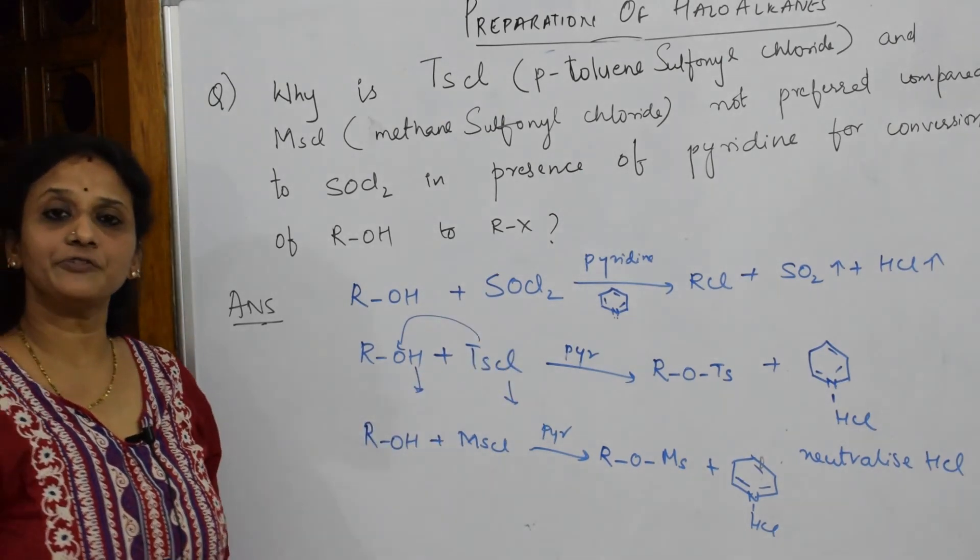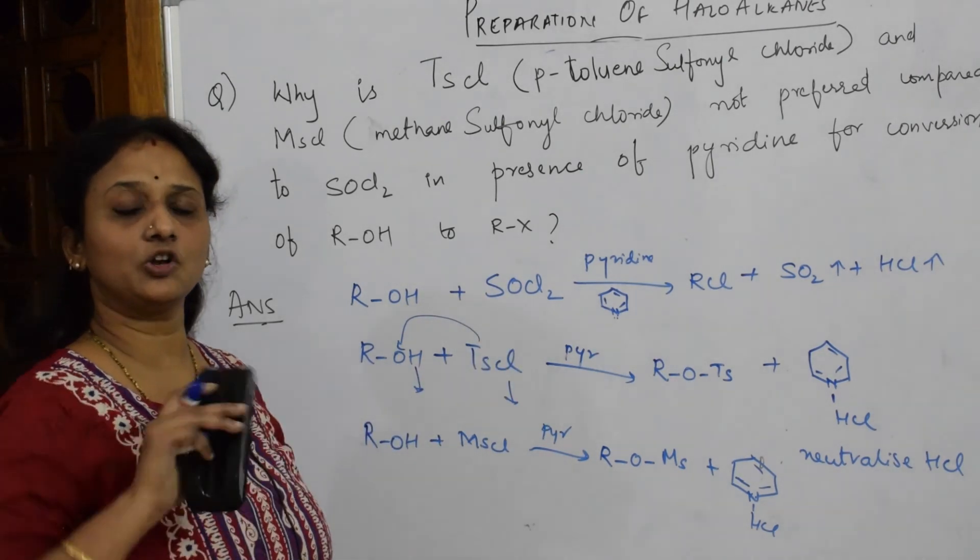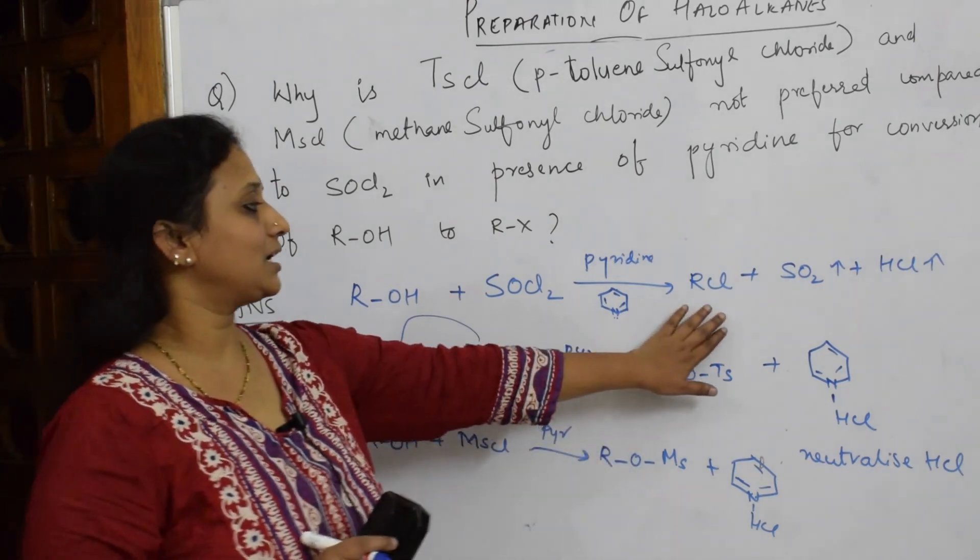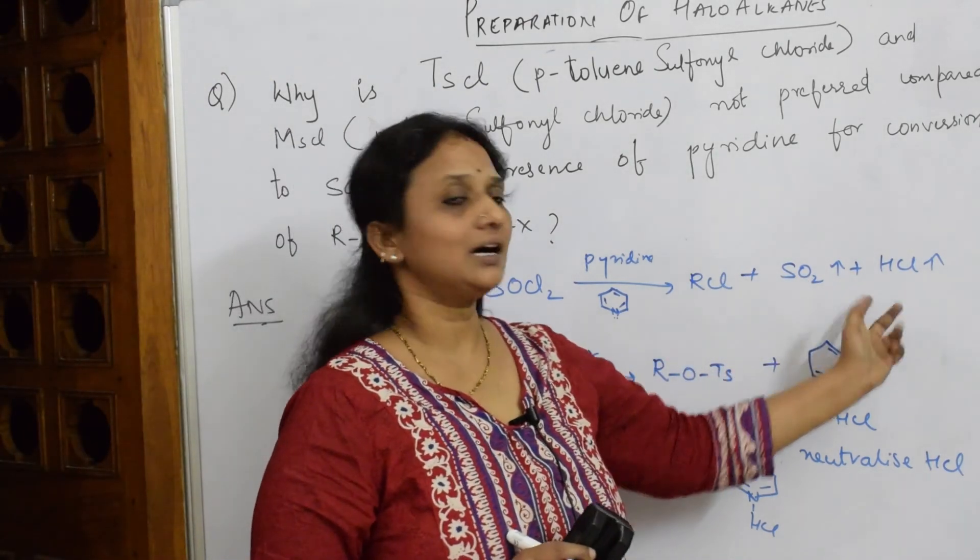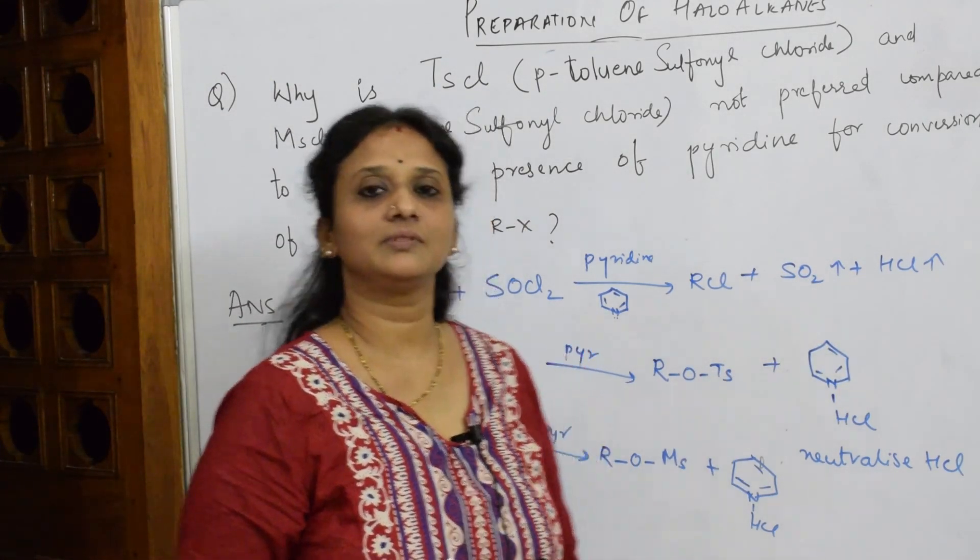That is the reason MSCl and TSCl are not preferred for preparing RCl. Thionyl chloride is the safest and economical method for preparing alkyl halides as both are gaseous products. Thank you for watching.